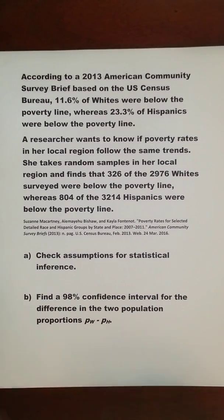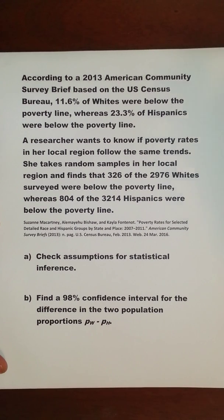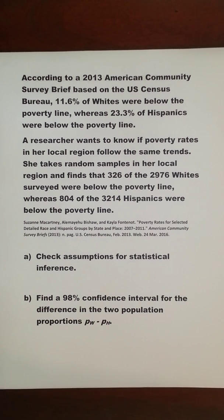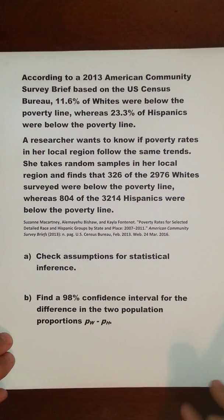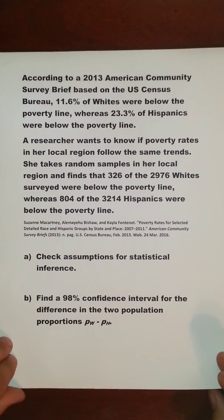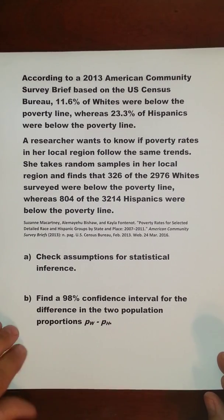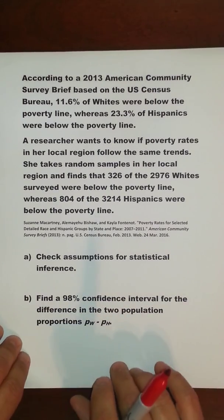According to a 2013 American Community Survey brief based on the U.S. Census Bureau, 11.6% of whites were below the poverty line, whereas 23.3% of Hispanics were below the poverty line. A researcher wants to know if the poverty rates in her local region follow the same trends. She takes random samples and finds that 326 of the 2,976 whites surveyed were below the poverty line, whereas 804 of the 3,214 Hispanics were below the poverty line. We're going to check assumptions or conditions and then find the confidence interval for the difference in the two population proportions, P_W minus P_H, for the researcher's region.